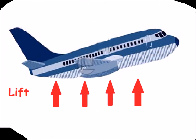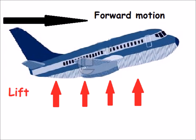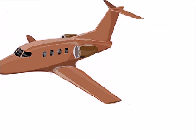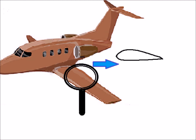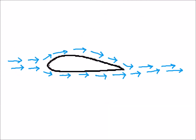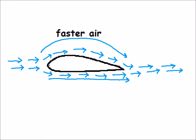Lift is the force which moves the airplane upward. It is generated by the forward motion of the airplane through the air. A jet plane's wing has a special shape called an airfoil, that bulges more on top than on the bottom. When air passes along the wings, it splits into two streams. The air passing over the top has to travel farther than the air moving underneath, so the top air is forced to move faster.